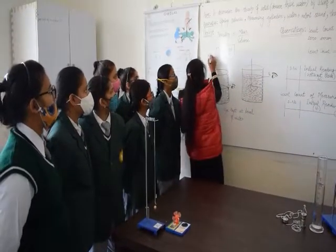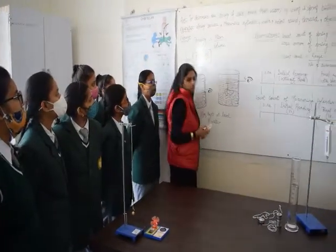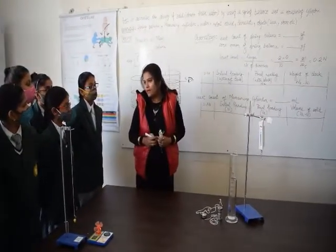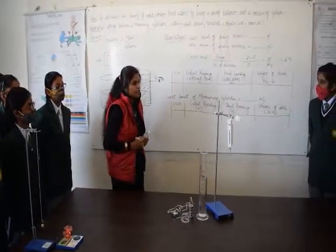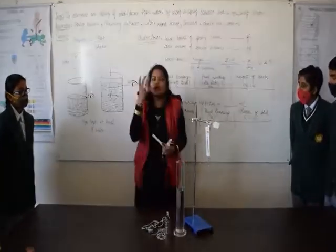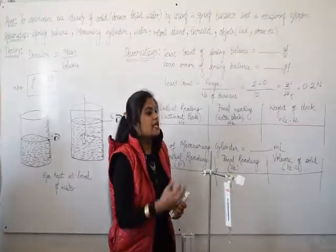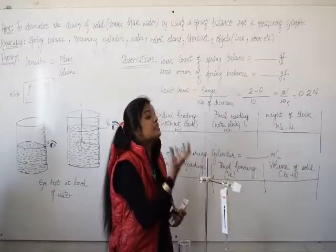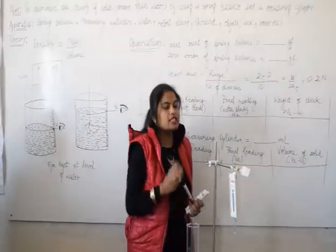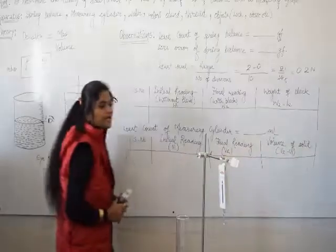Density is represented by rho. It is known as rho which is equal to mass per unit volume. Now what is the principle behind this experiment? Archimedes principle. Whenever an object is partially or wholly immersed in a liquid it displaces equal volume equal to its weight's volume of the liquid. And then we can calculate the volume.